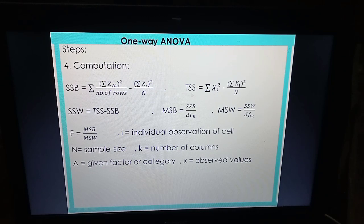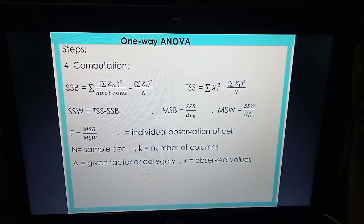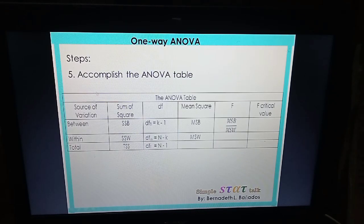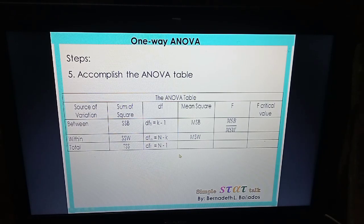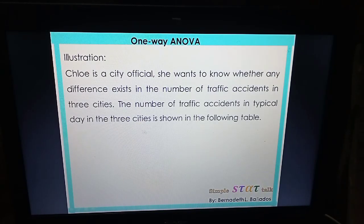These are the formula that we need to use if we wanted to compute the F-value. We need all of these to obtain the F-value. We'll compare the F-value to the critical value so we can make our decision. Next, we need to summarize our computed values by following this ANOVA table format.